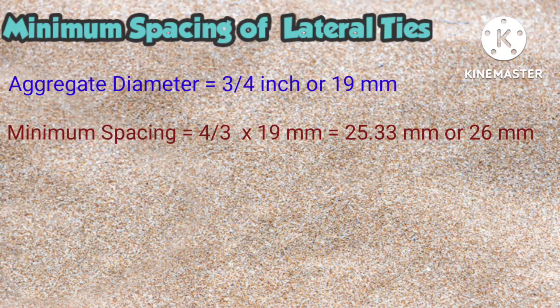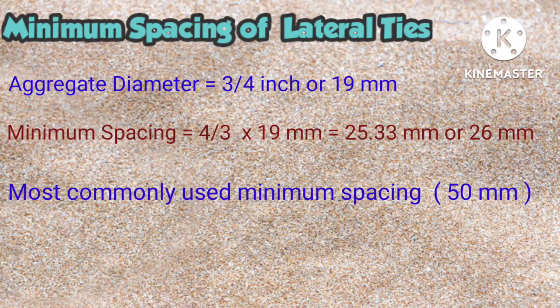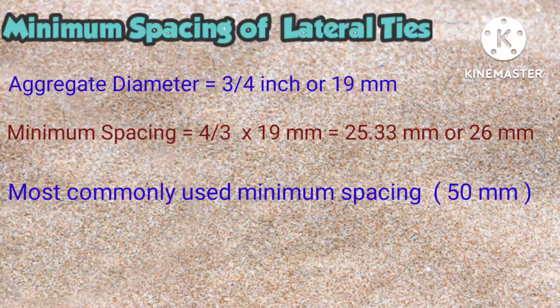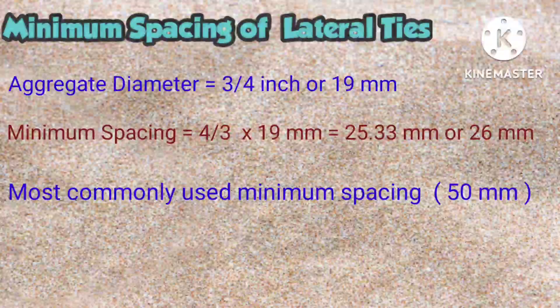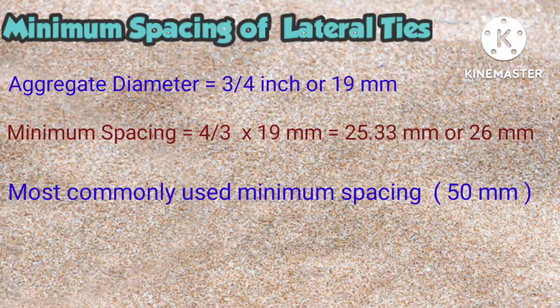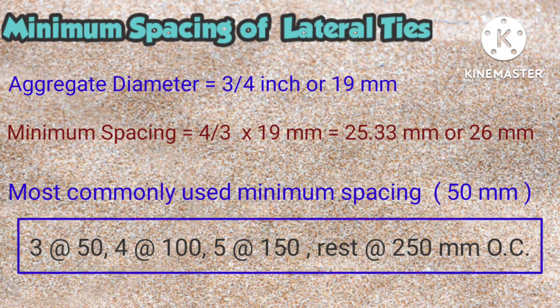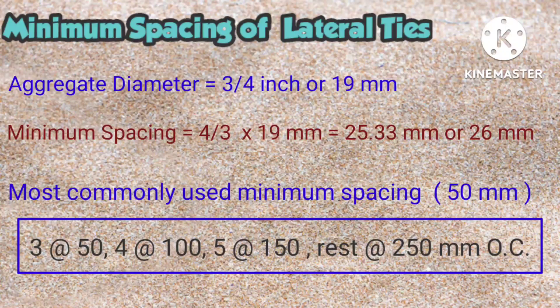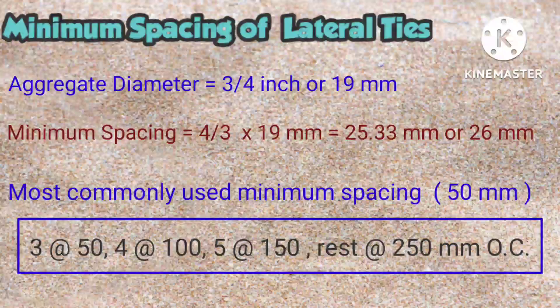In actual construction works, the minimum spacing of 50mm is commonly used, just like the sample shown earlier. So therefore, instead of 26mm, we can also use 50mm as the minimum spacing.